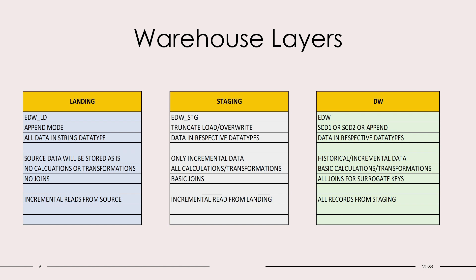In the landing layer there will be no joining of tables — we will read the data and keep it as-is without joining with any other tables. In staging we will do basic joins whichever are required for transformations. In DW we will do all the joins required to populate the surrogate keys.